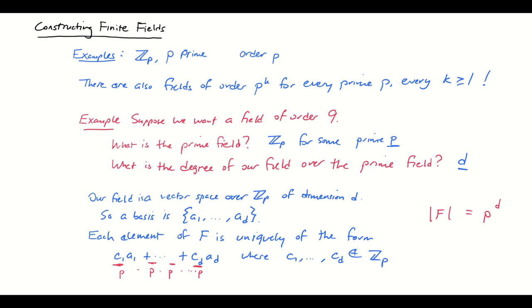So my field has order p to the d, that is p being the prime from which I got Z mod p, the prime field, and then d the degree of my field over the prime field.